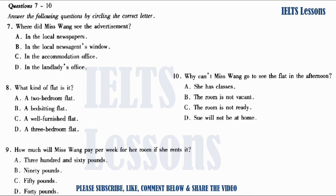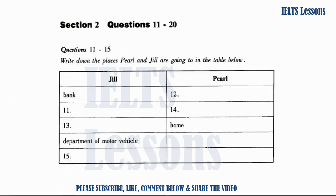That is the end of section one. Now you will have half a minute to check your answers. Now turn to section two. Section two. In this section, you will hear a conversation between Pearl and Jill. They have met on the campus. As you listen to the conversation, write down the places they are going to in the table. First, you will have some time to look at questions eleven to fifteen.